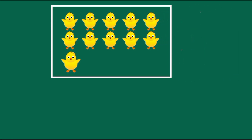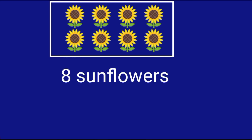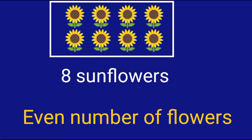Now look at this picture children. How many ducklings are seen here? There are 11 ducklings — and 11 is an odd number, so there are an odd number of ducklings. Look at this next picture. How many sunflowers are there? There are 8 sunflowers. Is 8 an odd or even number? Yes, 8 is an even number, so an even number of sunflowers are seen here.